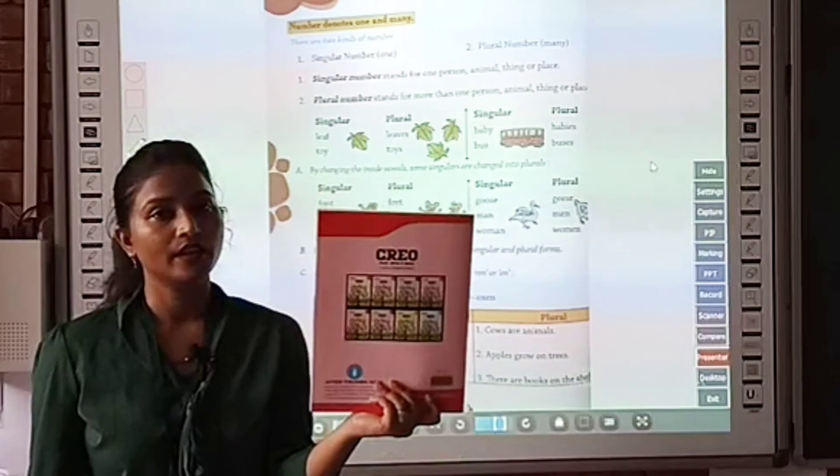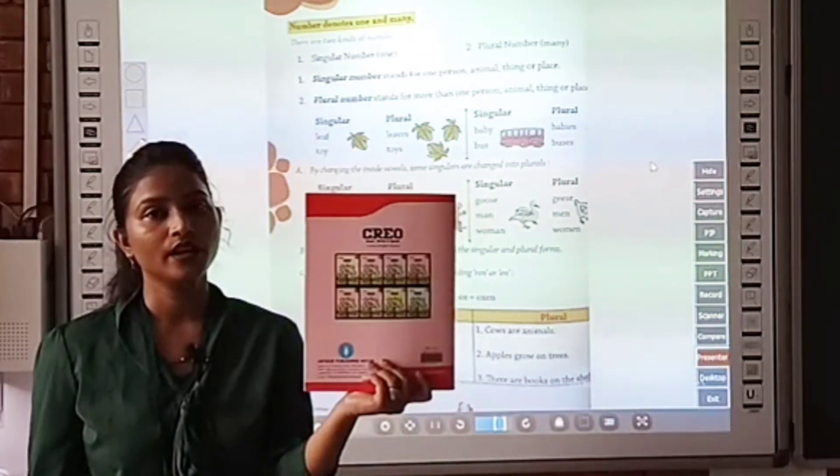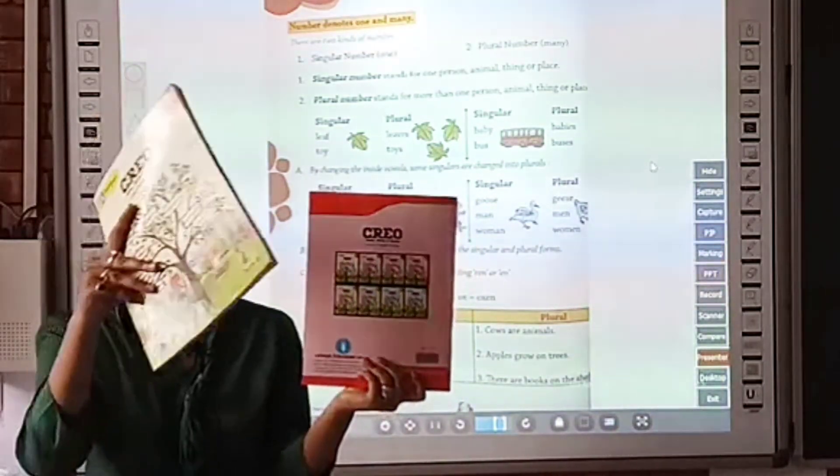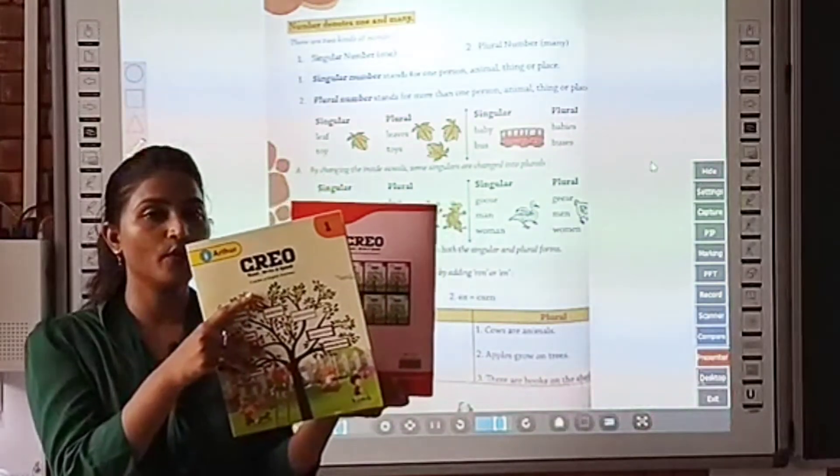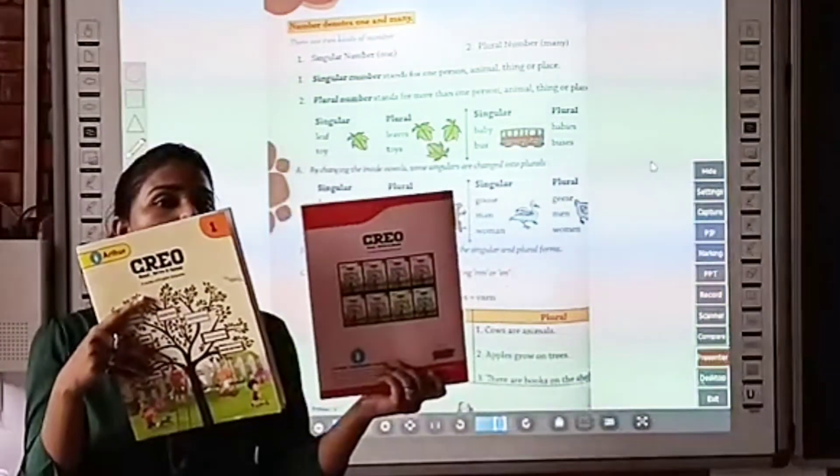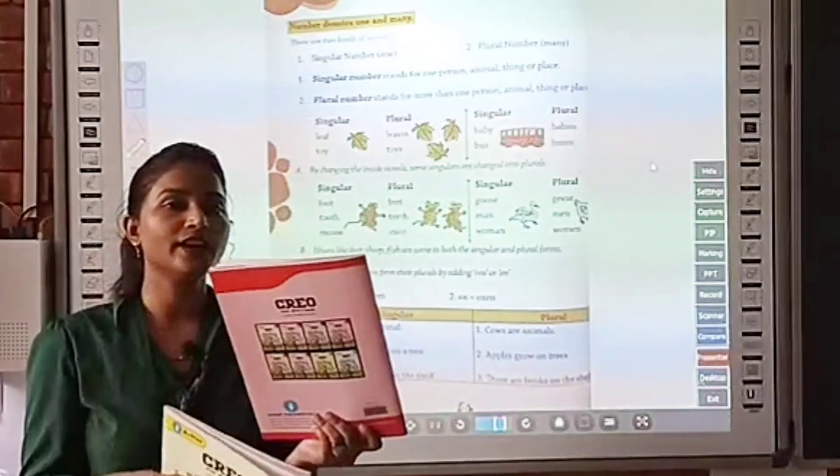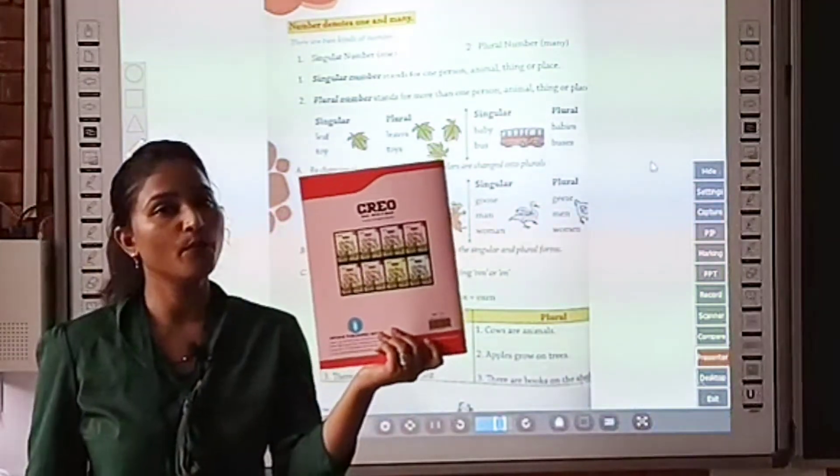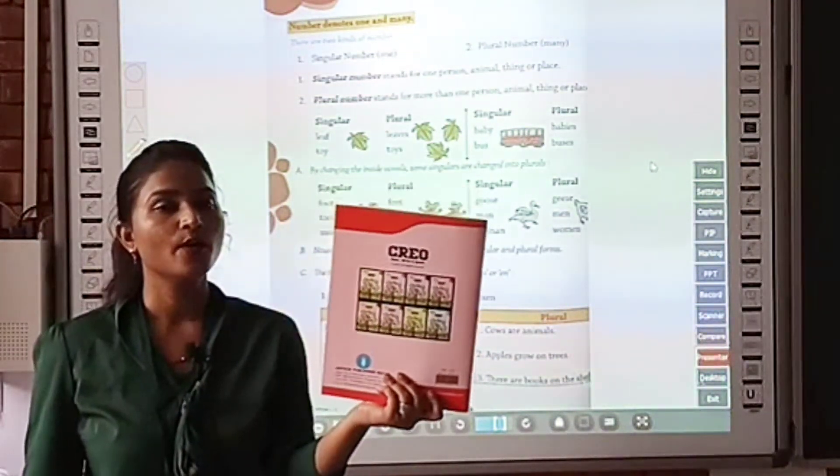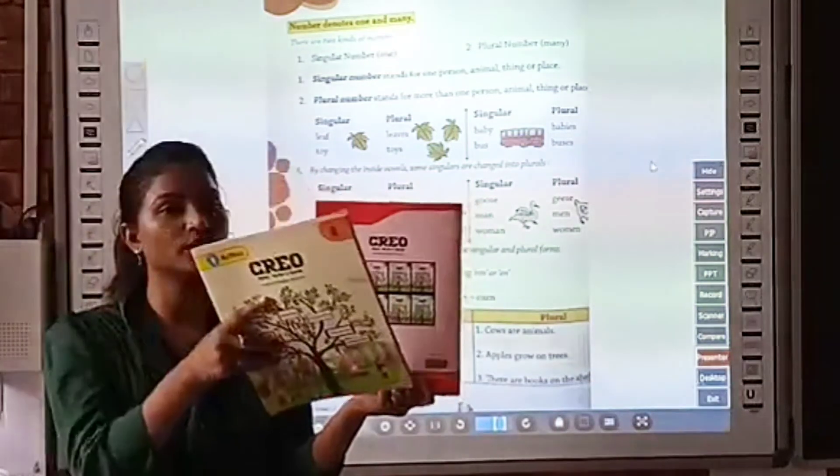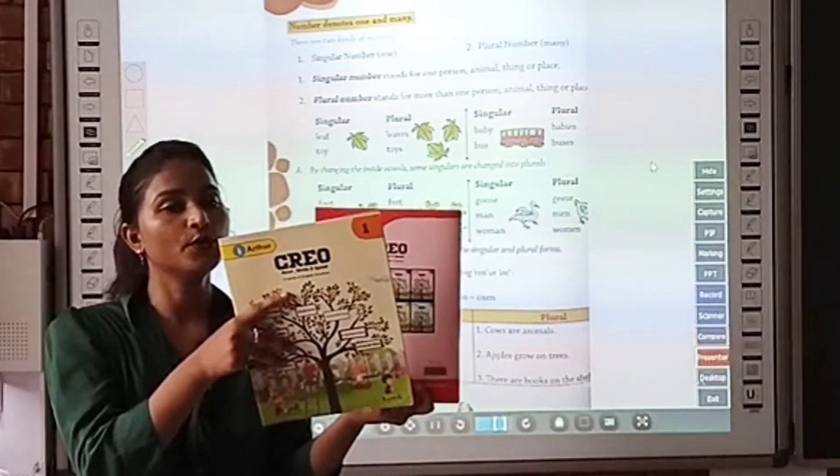Like here I have one book. So if I take one more book, now this book becomes books. So children, when I talked about book it was singular. When I added one more book it becomes plural.